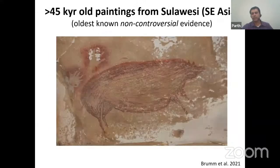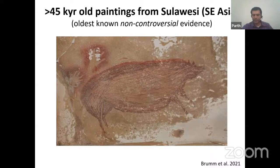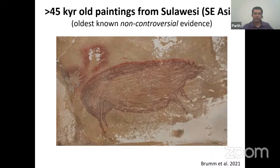The most accepted, non-controversial oldest rock paintings in the world are about 45,000 years old, recently reported from Sulawesi in Southeast Asia. This has major implications for India because if these populations had knowledge of painting and passed through the subcontinent to reach Southeast Asia, then possibly older paintings exist in the Indian subcontinent. However, we don't know the route they took — whether through Central Asia or the subcontinent — and whether they had this knowledge while dispersing out of Africa or developed it independently.